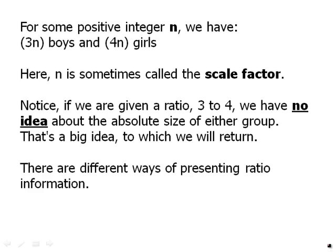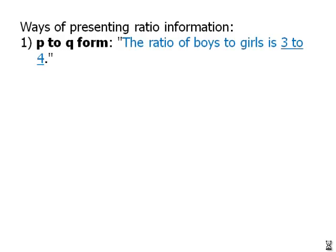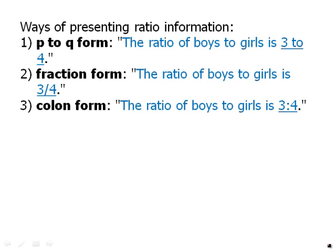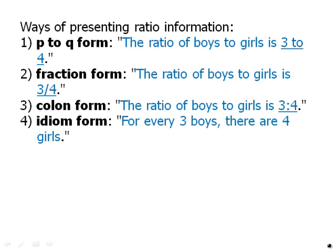There are many different ways of presenting ratio information. The first, I'll call it p to q form. The ratio of boys to girls is 3 to 4. We just spell it out literally like that. Second is fraction form. The ratio of boys to girls is 3 fourths. We can write it as a fraction. Third is colon form. This is very common on the test. The ratio of boys to girls. We read this as 3 to 4, but it's written with a colon. And then finally, a tricky one. I'll call this idiom form. For every 3 boys, there are 4 girls. So that's an idiomatic way in English to say exactly the same thing.